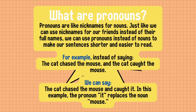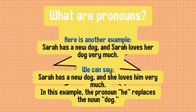Let's see an example. 'The cat chased the mouse and the cat caught the mouse.' We can simply say 'The cat chased the mouse and caught it.' In this example, the pronoun 'it' replaces the noun 'mouse.' Let's see another example. 'Sara has a new dog and Sara loves her dog very much.' Here, we say 'Sara has a new dog and she loves him very much.'